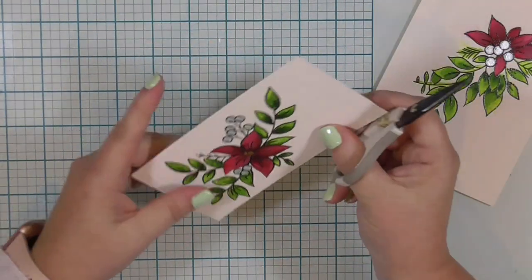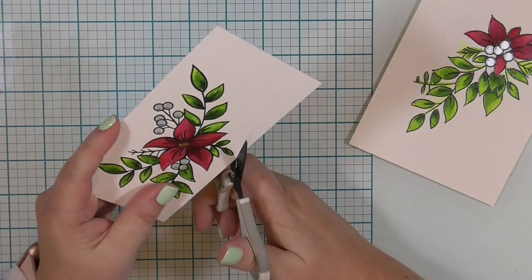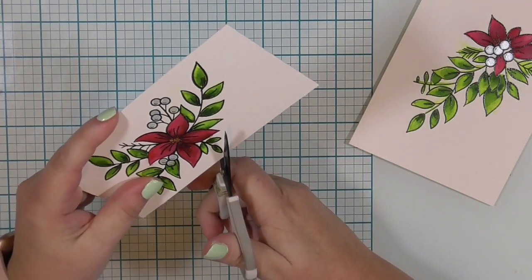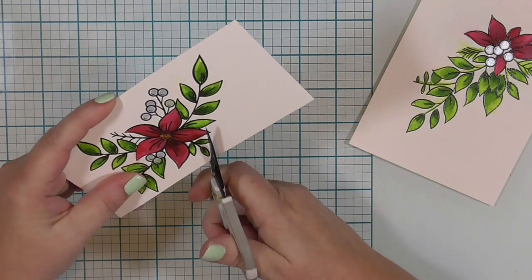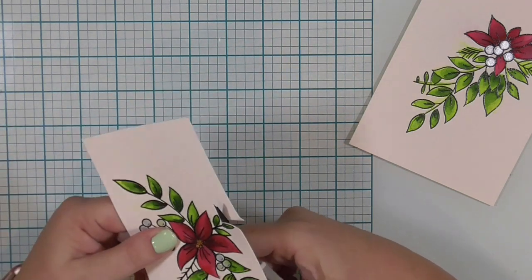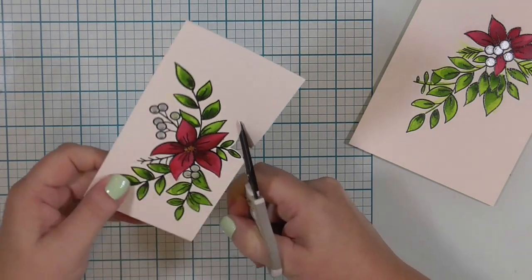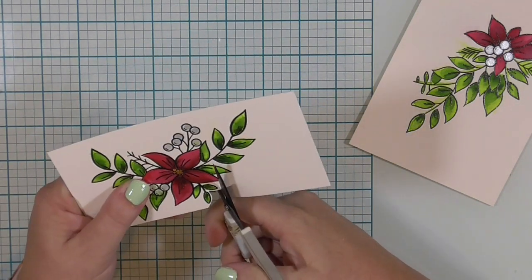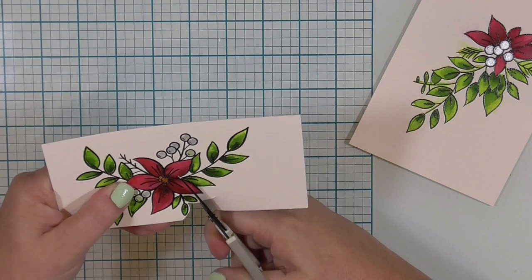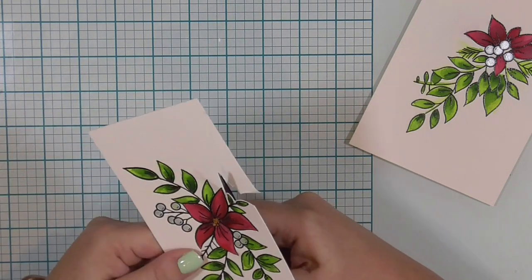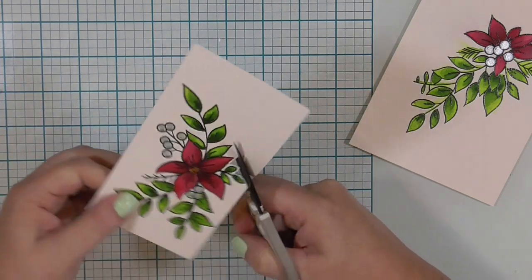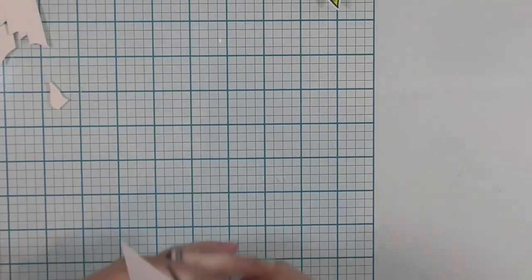I am going to go ahead and fussy cut these images out. I could send them through my Brother Scan and Cut, but it's on watercolor cardstock or watercolor paper and it's a little bit thick. And sometimes the blade in my Scan and Cut just drags on that thicker paper.